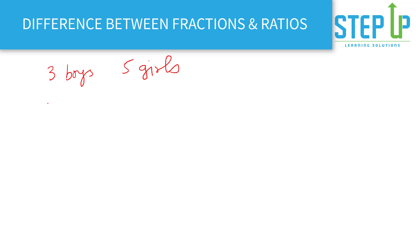Let's say we have three boys and five girls in a class. Technically speaking, fractions is part to whole. What that means is if I ask you what is the fraction of boys in the class, you can say three by eight - a part (boys) to whole (three plus five, boys plus girls). So this is the fraction. Or if I ask you what is the fraction of girls in the class, it is five by eight.